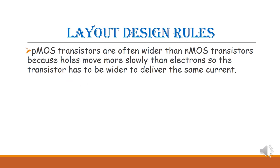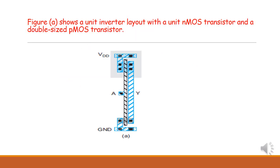This is the unit inverter layout with a unit NMOS transistor and a double-sized PMOS transistor. If a PMOS transistor needs to deliver the same current as the NMOS transistor, it should be double the size of the NMOS transistor.